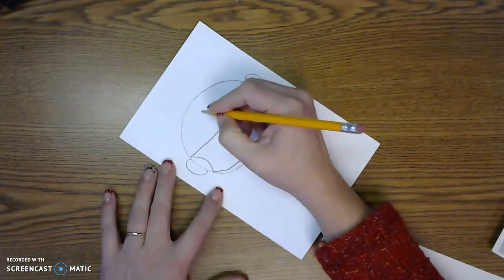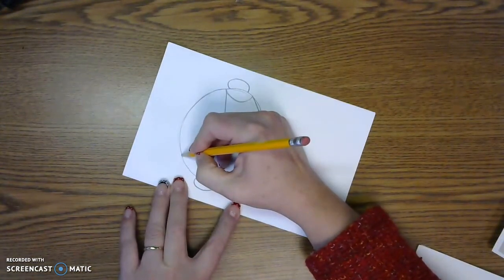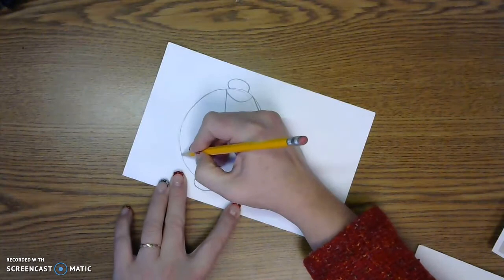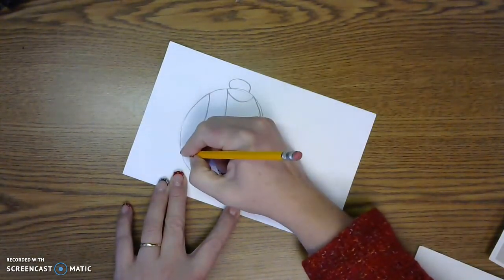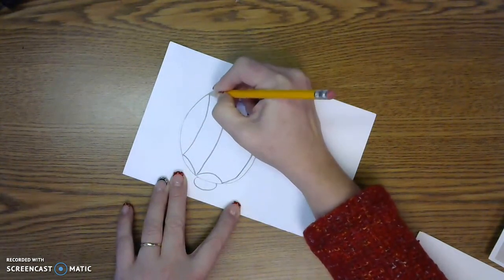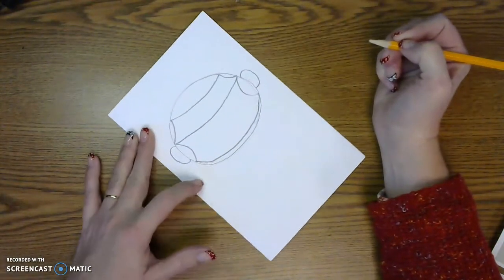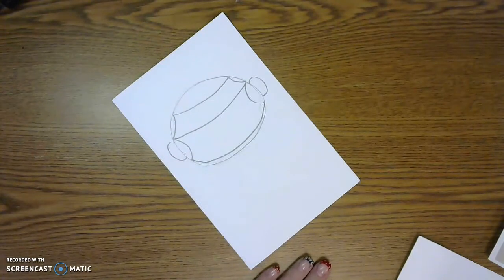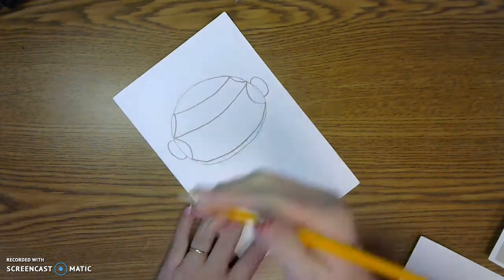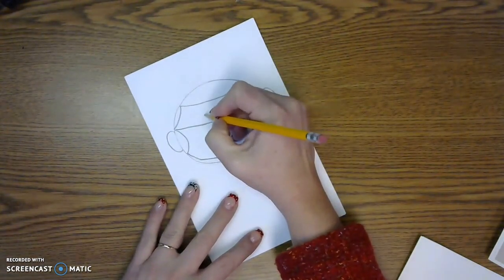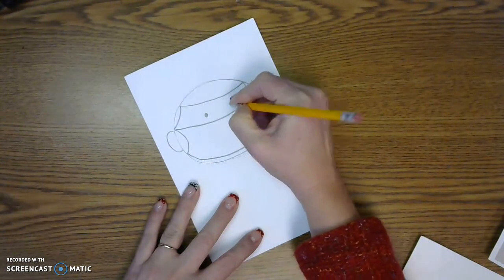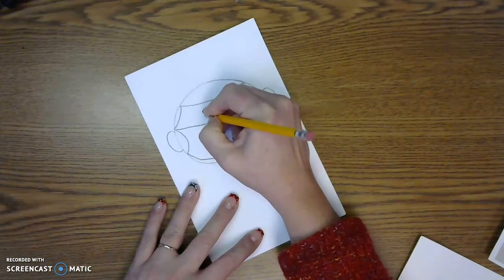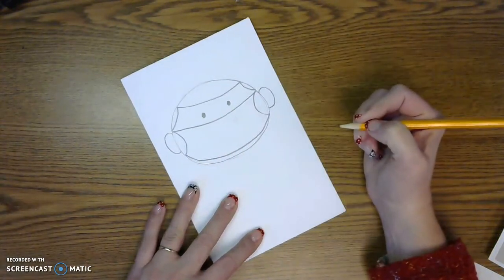Then I'm going to give him some hair, him or her, some hair like that. And then some eyes because you can see the eyes, right? I try to make them about the same size.